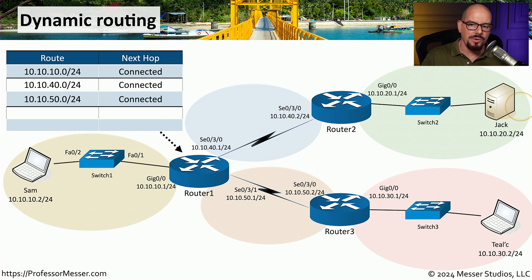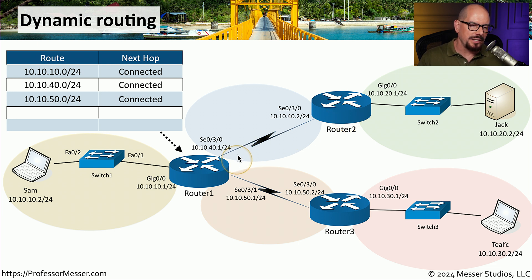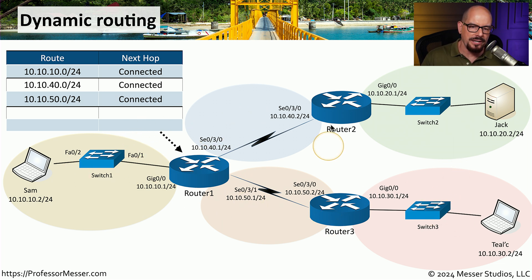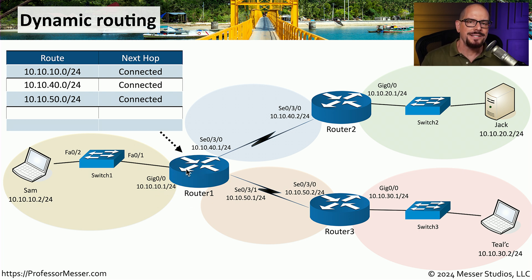Let's look at this network configuration where we have SAM that may want to communicate across the network to Jack or to Tilk. You'll notice that there are three different routers, and for this particular example, let's focus on router 1. You'll notice that router 1 is directly connected to three different subnets, but there are two subnets on the other side of router 2 and router 3 that router 1 simply can't see. So we need some way to update router 1 with those additional routes.